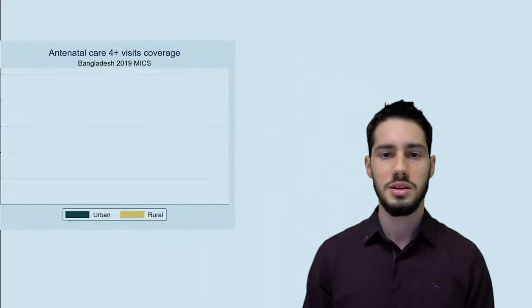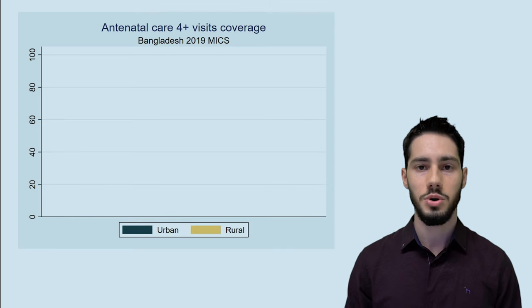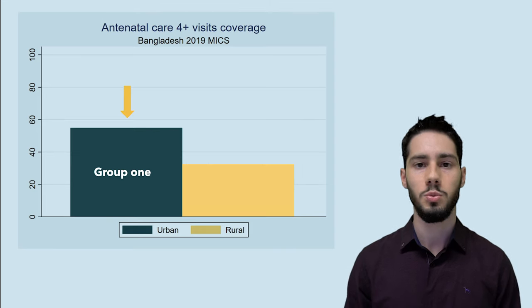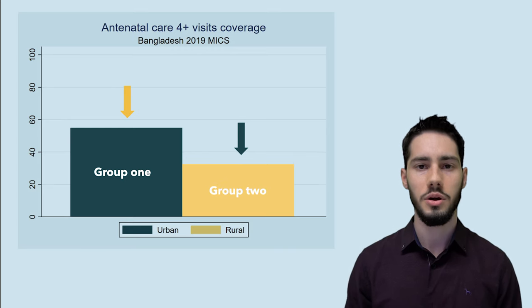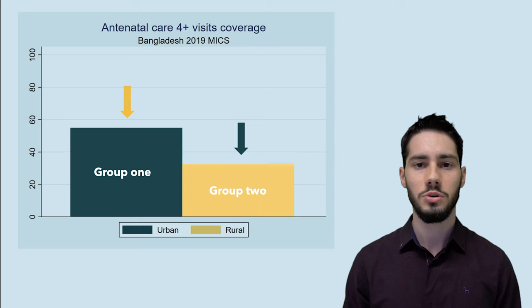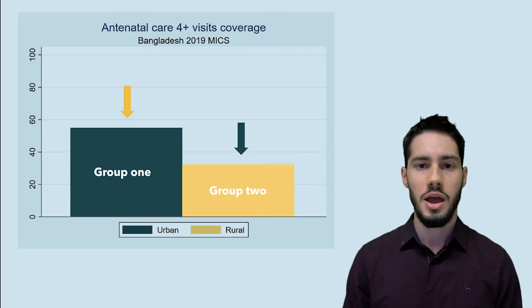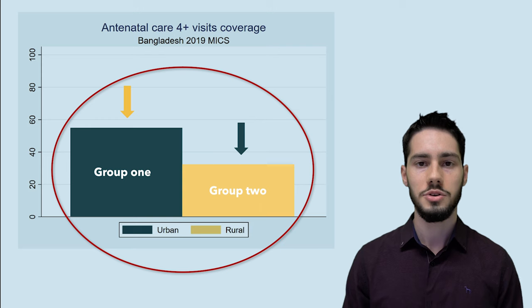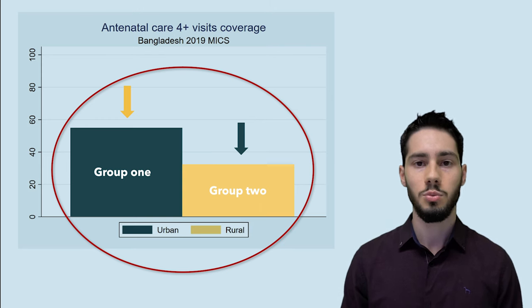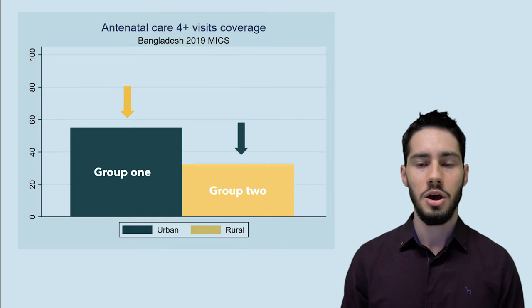When assessing inequalities between subgroups, we are often interested in relative measures of inequality. The simplest relative measure is the ratio, in which we divide group 1 by group 2 and the measure will tell us how many times group 1 is larger or smaller than group 2. As we can see in the example here, the coverage in urban areas is almost twice as high as in the rural areas — in other words, the ratio is 1.7.